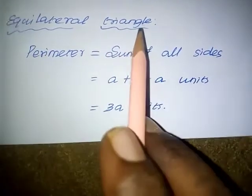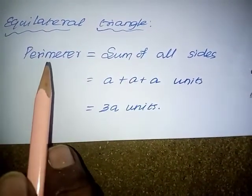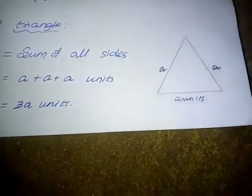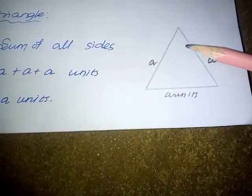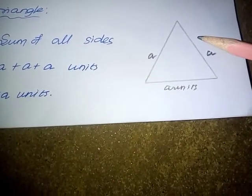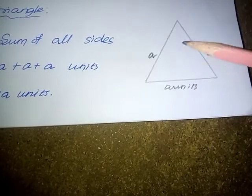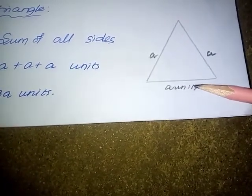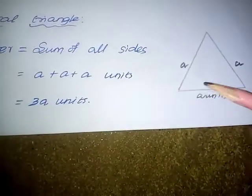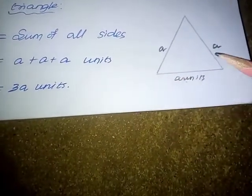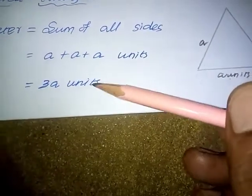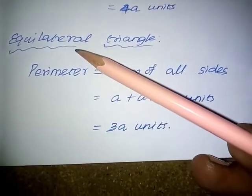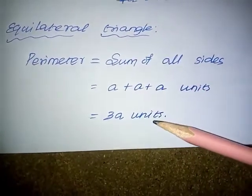Equilateral Triangle. Perimeter equals the sum of all sides. A triangle is a three-sided shape where all sides are equal. We take one side equal to A units. Sum of all sides: A plus A plus A, which is totally 3A units. So, the perimeter of an equilateral triangle is 3A units.